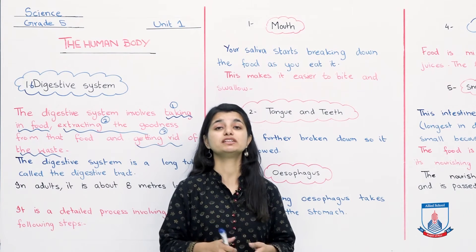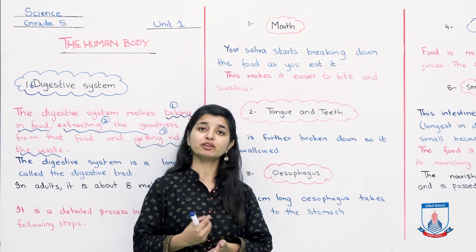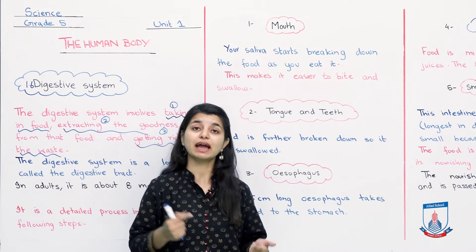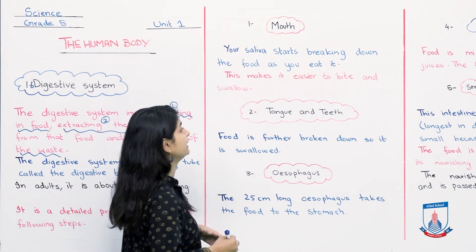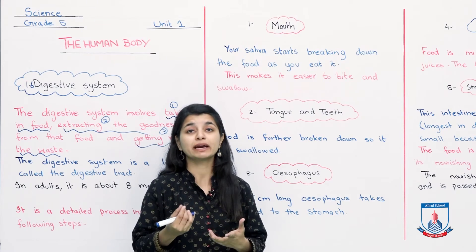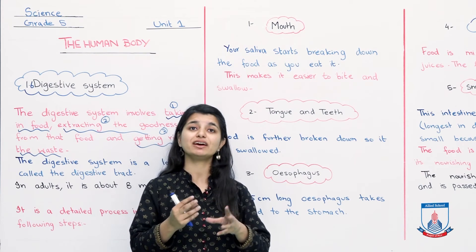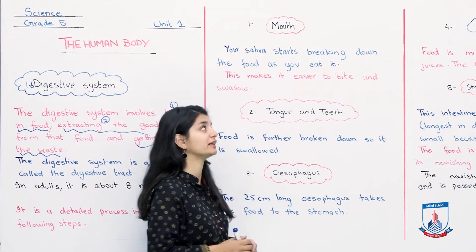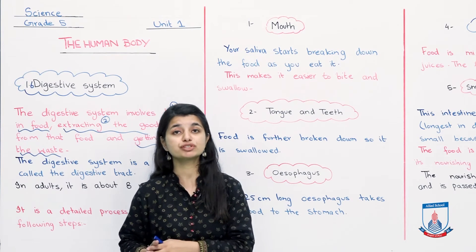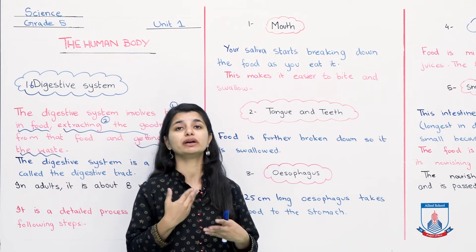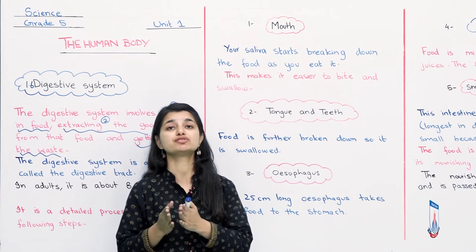The first place where the food enters your body is your mouth. Your saliva starts breaking down the food as you eat it. In your mouth, the saliva, which has a lot of enzymes, makes the food soft and helps break it down. This makes it easier to bite and swallow. So your digestion has started in the mouth through saliva softening and breaking down the food.